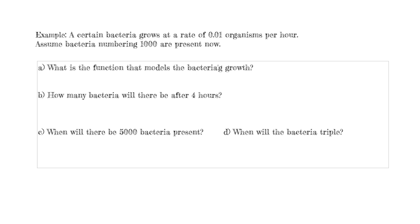In this example we'll look at a growth model. A certain bacteria grows at a rate of 0.01 organisms per hour. Assume bacteria numbering 1000 are present now. Our first task is to find the function that models the bacteria's growth. This is an exponential uninhibited growth function, and time represents hours. The initial value is 1000 and the growth rate K is 0.01. So our function is A of T equals 1000 times E raised to the 0.01T power.